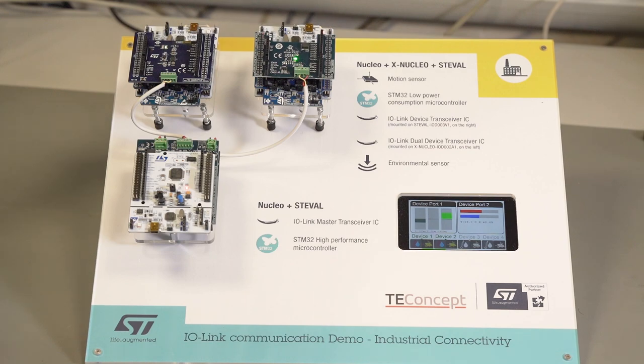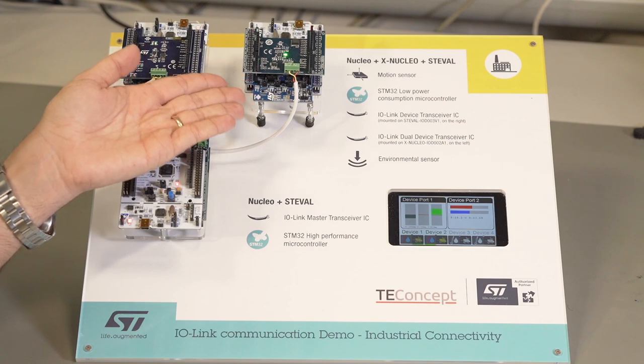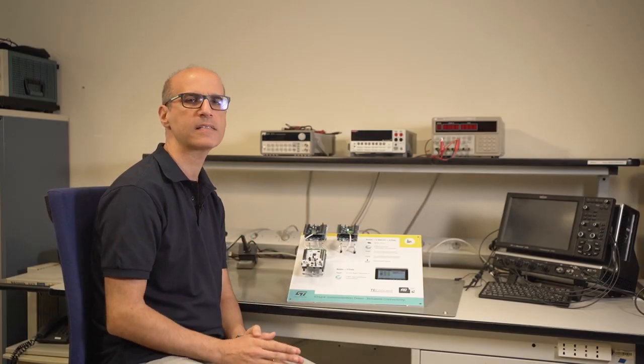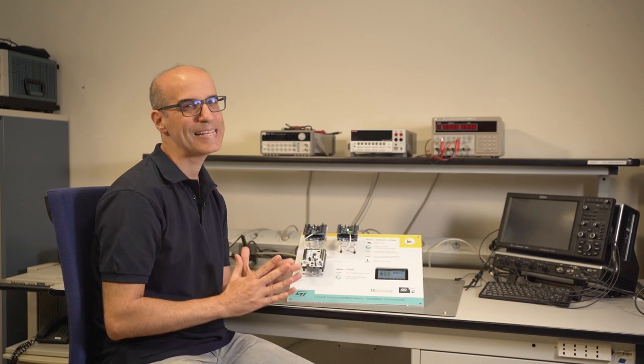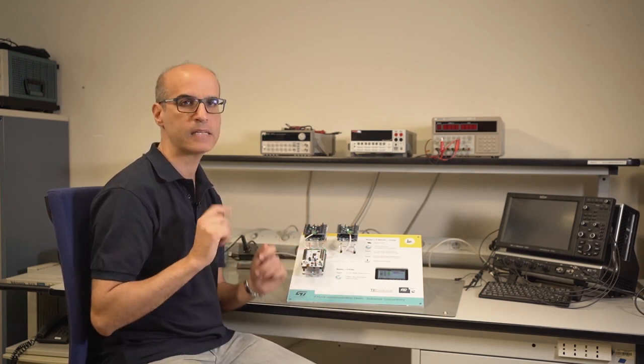The sensor boards include environmental, temperature, humidity and pressure, and MEMS, 3D gyroscope and 3D magnetometer sensors. The transceiver board integrates the L6362A, the ST single channel transceiver for standard IO and IO-Link sensor applications.